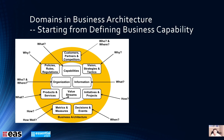From the business architecture parts, you can already see it's starting to be complicated. But using Essential gives you a good chance to have a more systematic way to think about those domains. These domains are only talking about the business layer. In Essential, the extended meta model also covers application, information, and technology layers. So you can now imagine how big the potential is for using Essential.